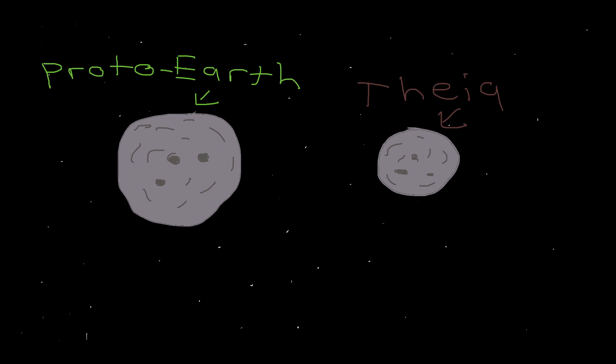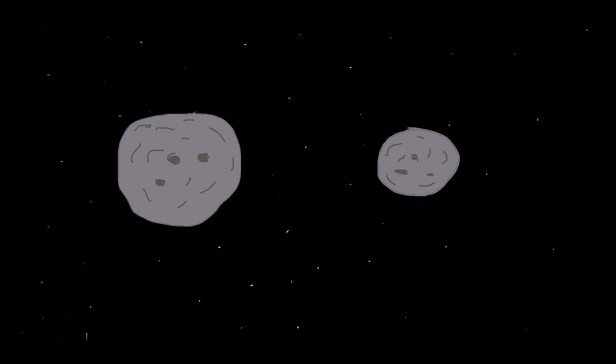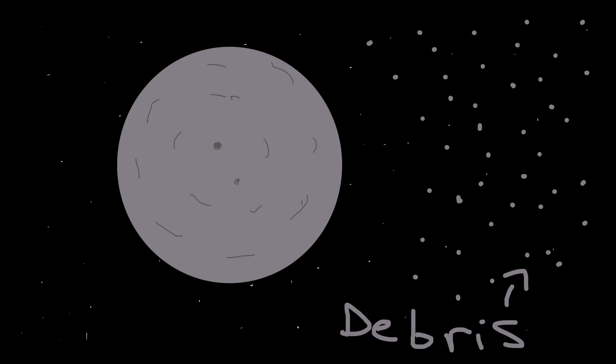But wait, there's more. Here's Earth. Well, not really. It's Proto-Earth and Theia. Two protoplanets. Theia is about the size of Mars. The two protoplanets collided in an epic fight to the death, causing them to form one planet called Earth.